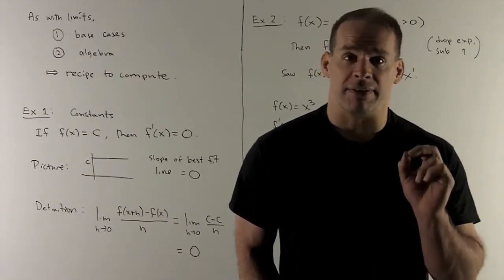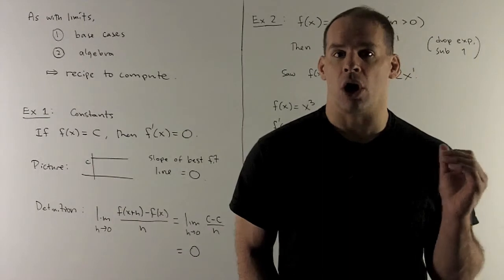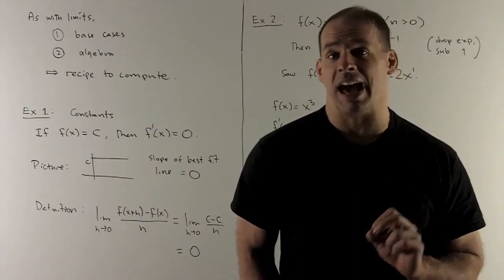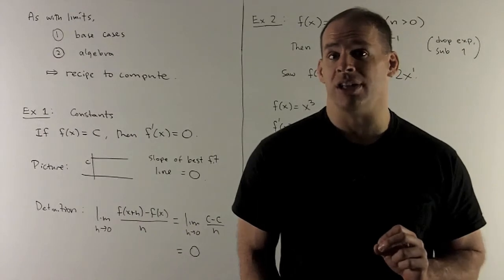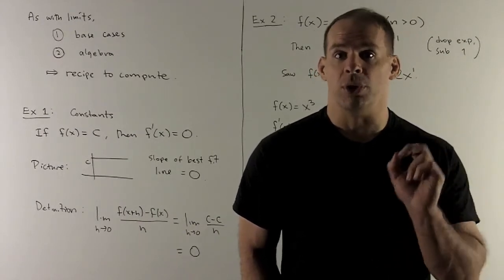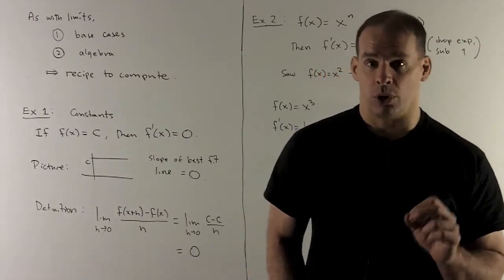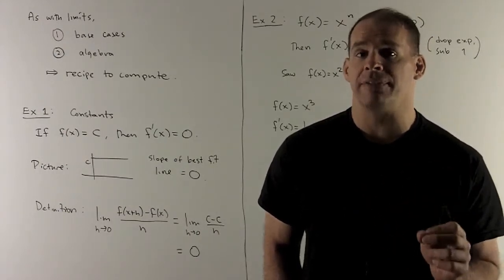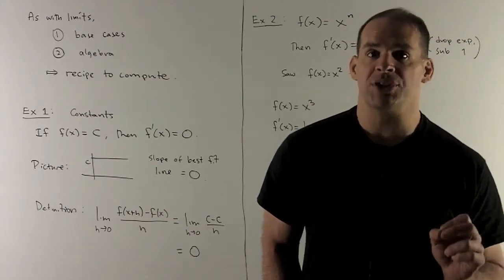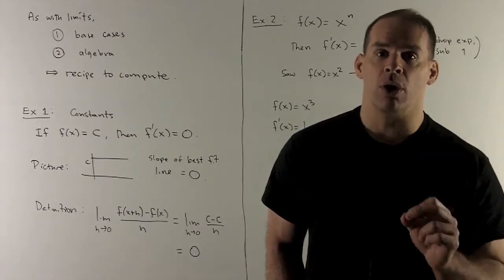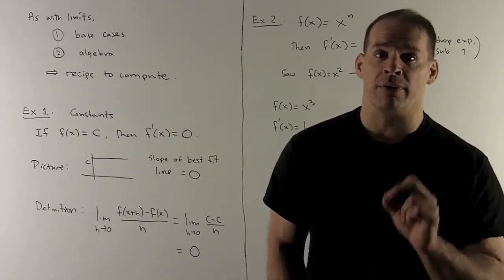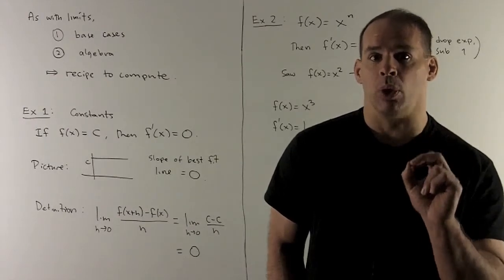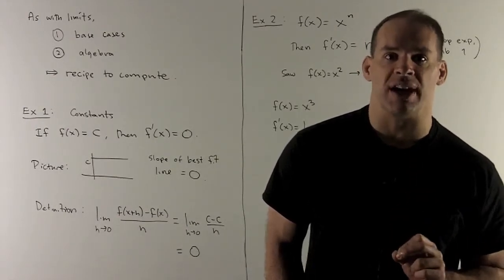From the picture, this makes sense. If I have a constant function, its graph is going to be a horizontal line going through y equal to that constant c. The best fitting line to that line is the line itself, and since it's horizontal, its slope is going to be equal to zero. But we're going to do it mechanically using our definition: the limit as h goes to zero of f of x plus h minus f of x over h. No matter what we put into f, that constant c comes out, so that limit is going to be c minus c over h, or zero over h. As long as we're off of zero, zero over h is equal to zero, so that limit equals zero.